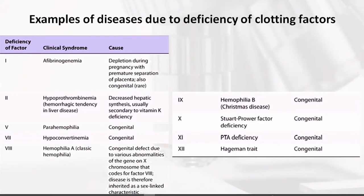Factor 7 is basically proconvertin, which is basically the involved factor. When it is absent, hypoconvertinemia is formed or occurs, and it is also a congenital disorder.